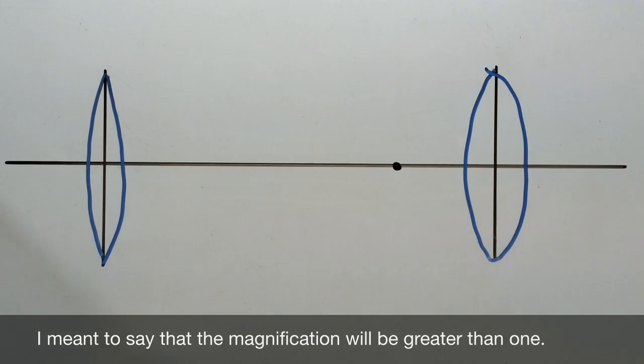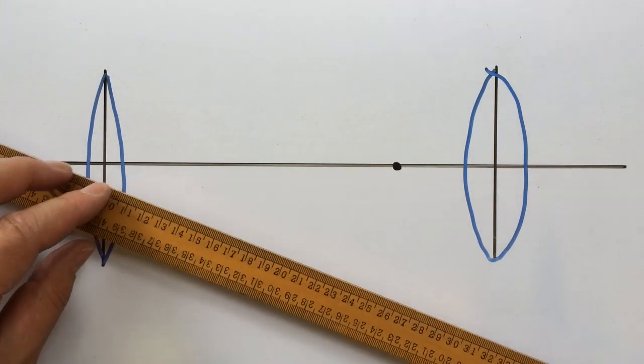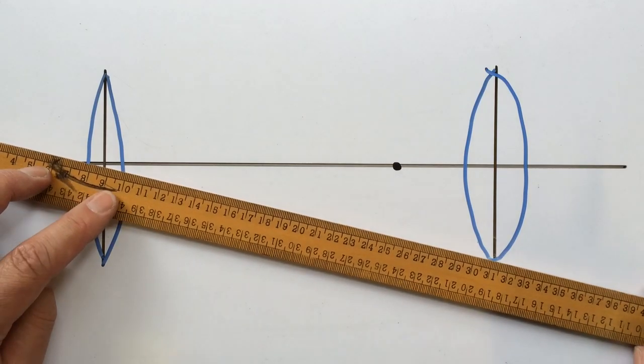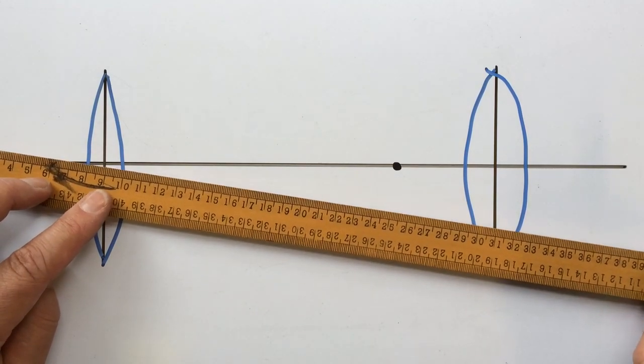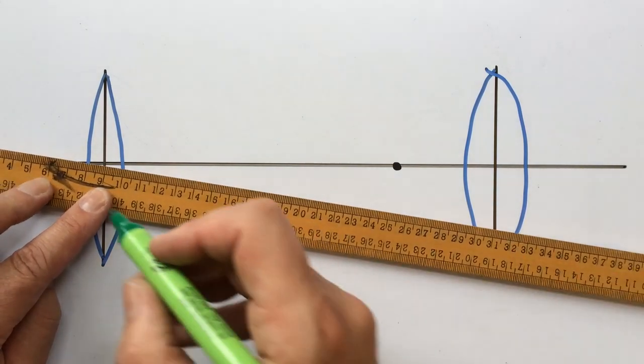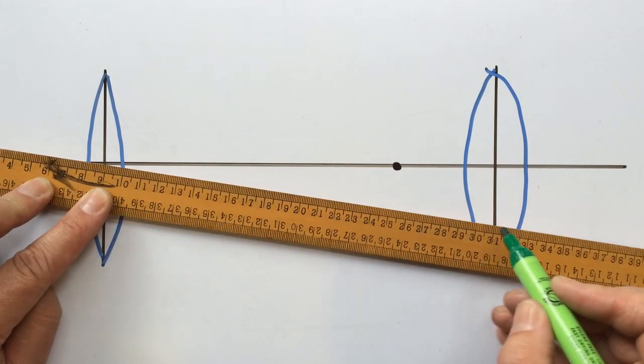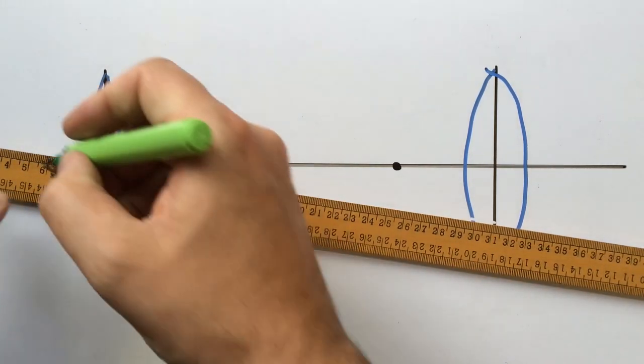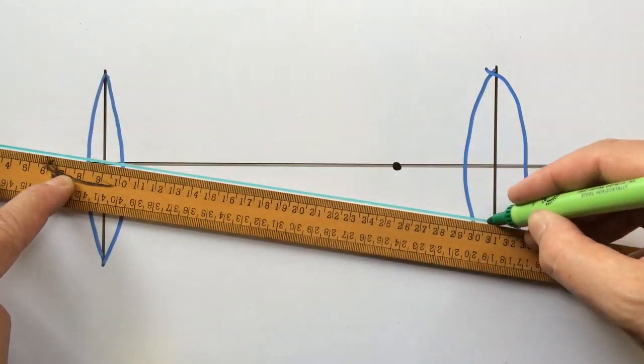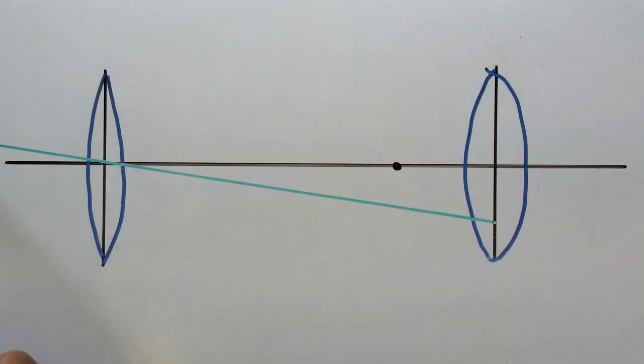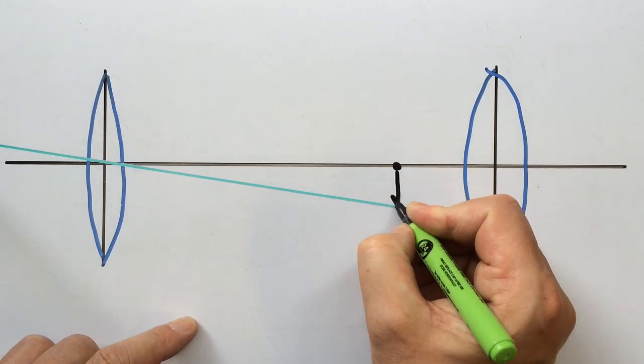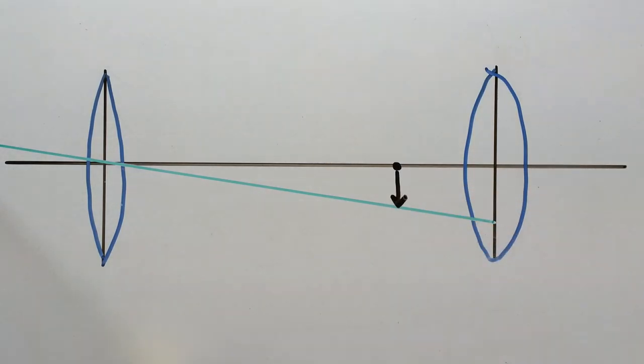Once you've done that, we need to start drawing the rays of light. Now any rays of light coming from an object that pass through the center of the lens will continue moving in a straight direction. So I'm going to draw a ray of light passing through the center of the objective which hits the eyepiece about just over halfway down. Now this will create an image located at the focus which touches that ray of light like so.